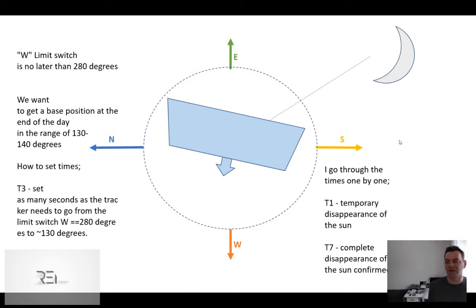If it disappeared, you wait the T1 time because maybe it's just the middle of the day with a lot of clouds. That's why the T1 parameter should be as big as possible. Then you confirm that using the T7 parameter.